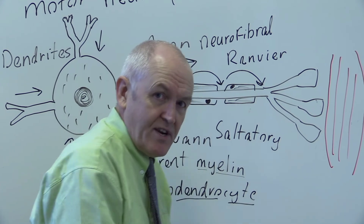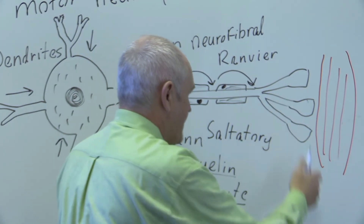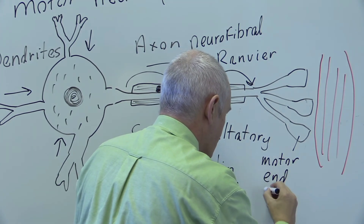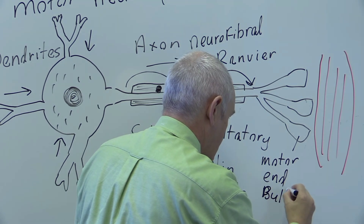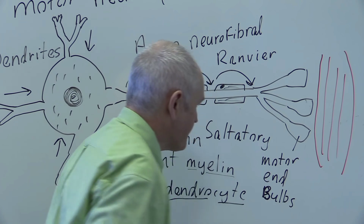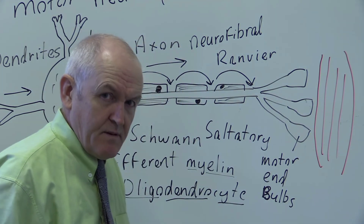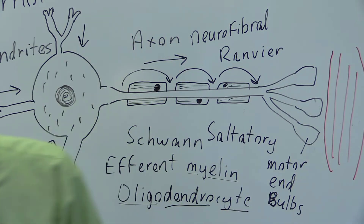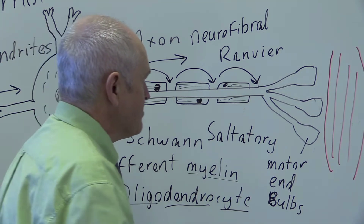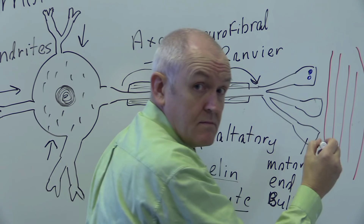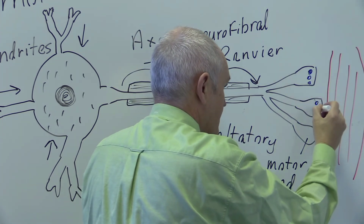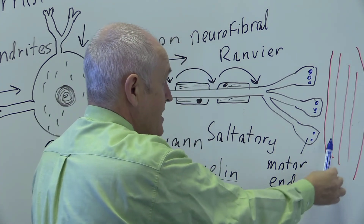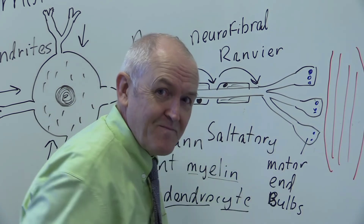Coming towards this end we notice that the motor neuron branches out and gets wider at the end. These are called the motor end bulbs. These motor end bulbs actually contain chemical transmitter substances, because the terminal portion of the motor neuron doesn't actually touch the skeletal muscle — there is a microscopic synaptic gap.